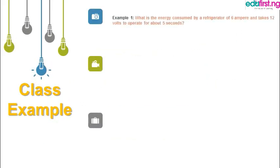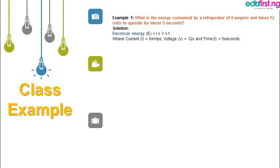Here are three examples. First: what is the energy consumed by a refrigerator drawing 6 amperes, taking 12 volts to operate, for 5 seconds? Since we're given electrical parameters — 6 amperes and 12 volts — we're looking for electrical energy. Electrical energy = I × V × T, that is current times voltage times time. Substituting the values: 6 amperes × 12 volts × 5 seconds gives us 360 joules.